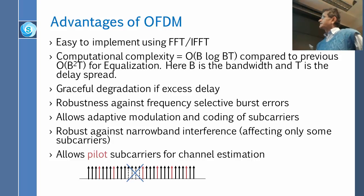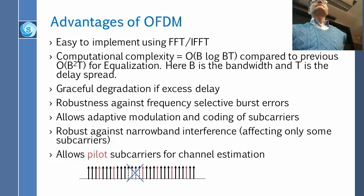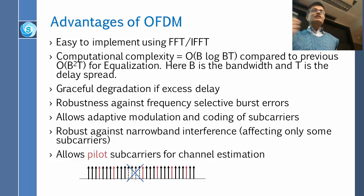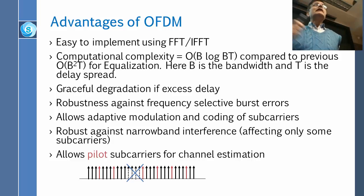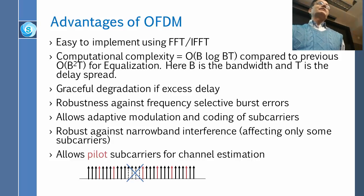OFDM also allows pilot subcarriers. Some of these frequencies can be used just for measurement — they don't have to carry data. So you can figure out where there is noise and where there is not. If there is noise at a frequency, those channels can be modulated differently. You have physical layer measurements which tell you how much noise there is, and you can make a decision about how to modulate those channels.